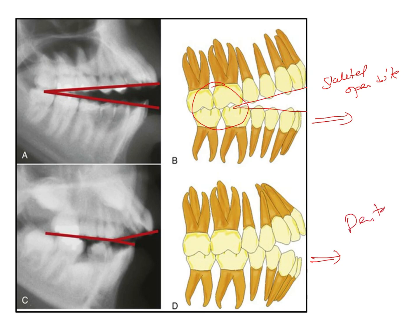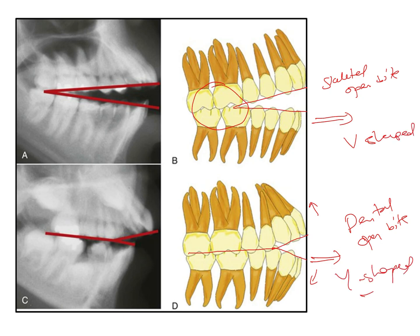In a dental open bite, which may be caused by habits like tongue thrusting or thumb sucking, what we see is more intrusion of the incisors causing the open bite — a more V-shaped opening in the anterior region while the rest occludes. You can identify the differences between a skeletal open bite and a dental open bite by these features. The dental open bite is easier to treat: elimination of the habit and extrusion of the incisors can bring about correction of the open bite.